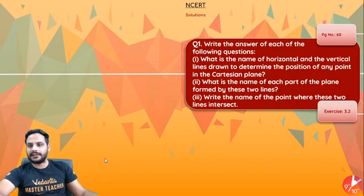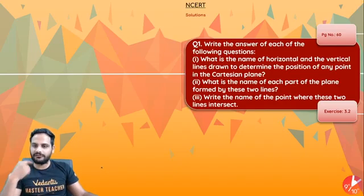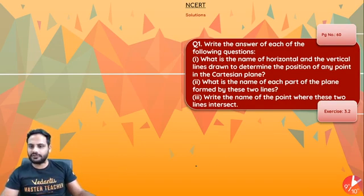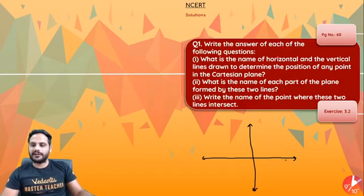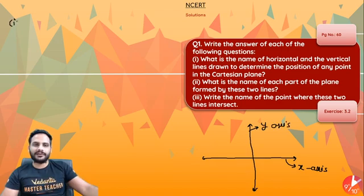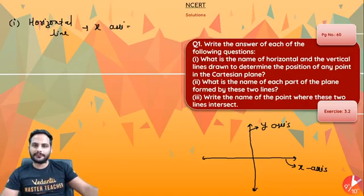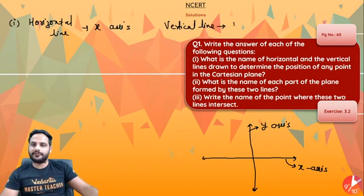First question: write the answer for each of the following. What is the name of the horizontal and vertical lines drawn to determine the position of any point in the Cartesian plane? The horizontal line is called the X-axis and the vertical line is called the Y-axis.